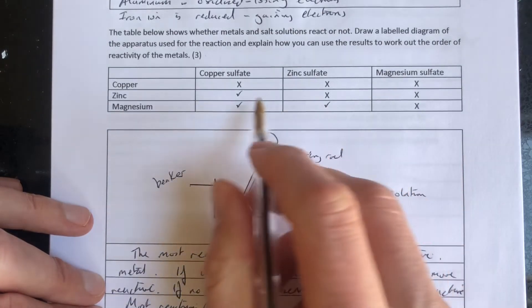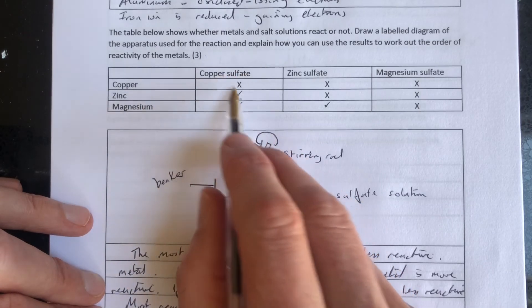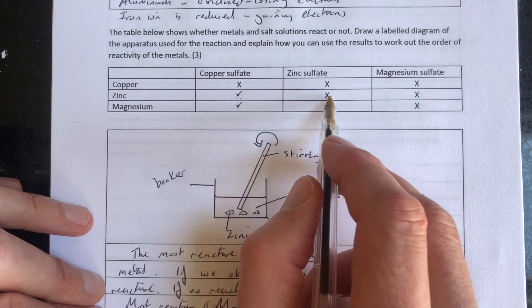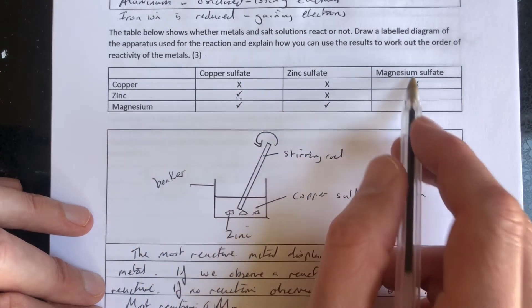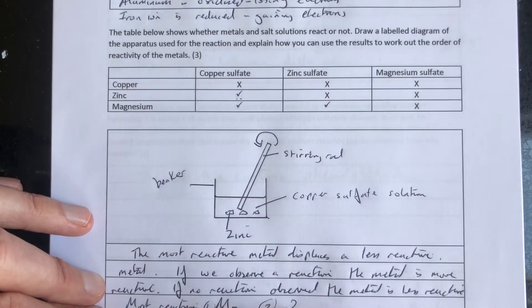Second most reactive, let's have a look: zinc. Zinc on its own reacts with copper sulphate, so zinc displaces the copper. Zinc is more reactive than copper. It doesn't react with itself, obviously. And it doesn't react with magnesium, so it's less reactive than magnesium. So number two: zinc.